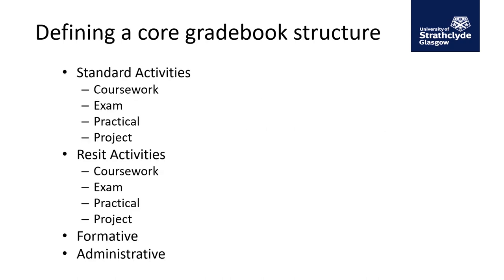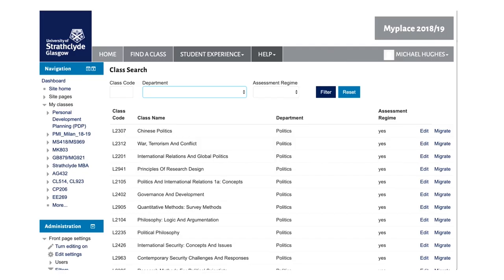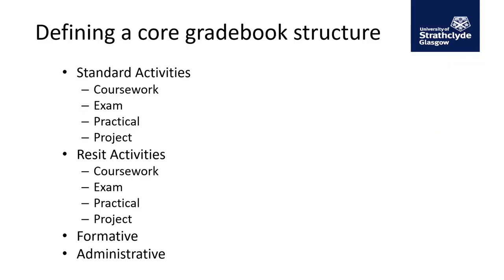We took this structure and mapped our component parts onto it. Due to the quirks of Moodle and how we work with the gradebook, we had to do a little bit of reorganizing, creating some additional categories. We split it up into standard activities — which tend to be the first attempt students — and resit activities for students doing a slightly different assessment regime. The important part is that when we show the gradebook to students, only the categories that are pertinent to the assessment regime are actually presented to them.